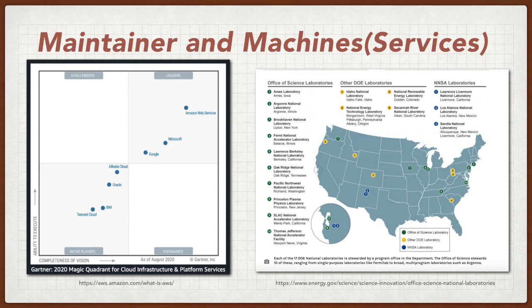The cloud computing service is mainly provided by commercial companies. The left side figure shows the main cloud computing service providers. You may know the names of these companies very well, such as Amazon, Microsoft, and Google, etc. In contrast, the right figure shows the main providers of HPC systems in the USA. We mainly list the main national laboratories under the DOE, which is the Department of Energy. These institutions are well known to people with a background in scientific computing, and these government-funded institutions are the main force for building HPC systems and have played an important role in history.